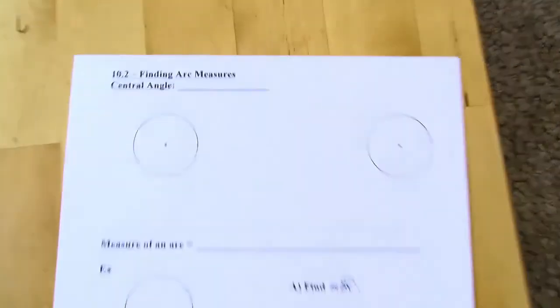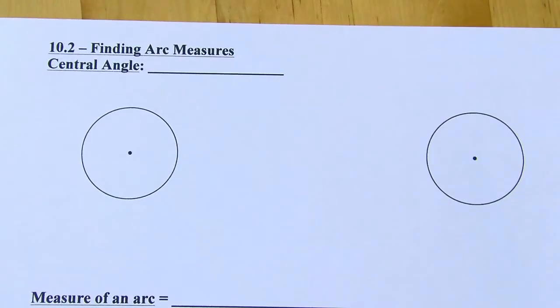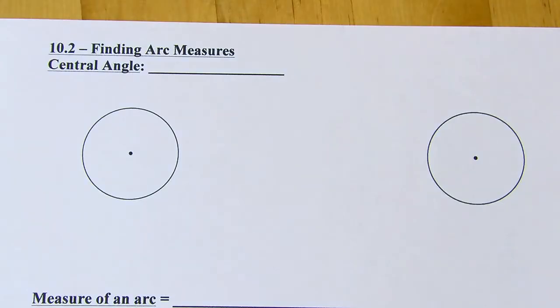10.2 is called finding arc measures. Before we get to arc measures, you have to know what a central angle is, and it's exactly what it sounds like. It's an angle where the vertex is at the center of a circle.